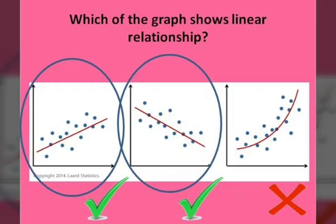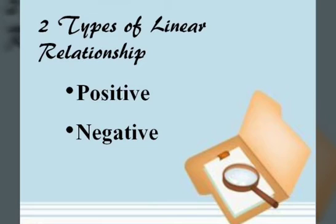Going back to our example, the first two graphs having a straight line are examples of linear relationships — the first one going up and the other going down. If a straight line on the graph travels upwards from left to right, it has a positive linear relationship, showing a steady rate of increase. If a straight line travels downwards from left to right, it has a negative linear relationship. There are two types of linear relationship: the positive and the negative.